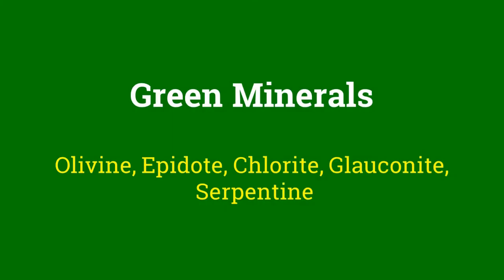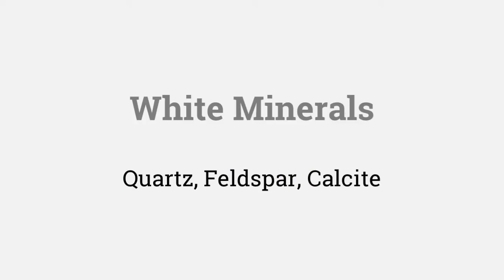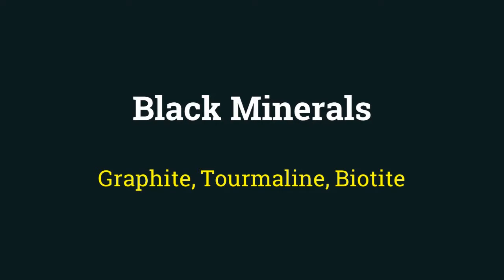At last, we finish our discussion on color with a brief listing of minerals of various colors. Minerals olivine, epidote, chlorite, glauconite and serpentine are of green color, whereas quartz, calcite and gypsum can be colorless. Quartz, feldspar and calcite can be white, and graphite, tourmaline and biotite are black minerals.